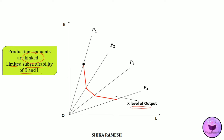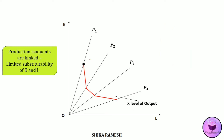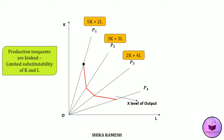With a smooth convex isoquant we can easily substitute labor for capital or capital for labor to produce the same output, but that is not possible with a kinked isoquant because the substitutability between labor and capital is limited — substitution can only happen at the kinks of each production method. For instance, in P1 method of production, 5 units of capital and 2 units of labor are used; in P2, 3 units of capital and 3 units of labor are used; and in P3, 2 units of capital and 4 units of labor are used for the same level of output.